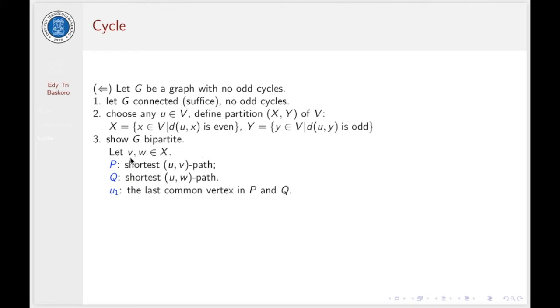Consider two vertices V and W in X. Because G is connected, we have a shortest path from U to V, call it path P, and another shortest path from U to W, call it path Q. Assume U1 is the last common vertex in P and Q.